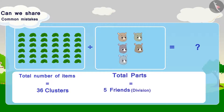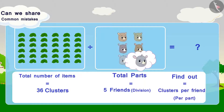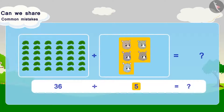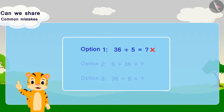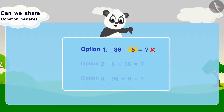In Option 1, total number of items equals 36 clusters and total parts equals five friends. But what will poor Gaggoo eat? In this option, Gaggoo has not been included while calculating the total parts. The total number of parts is wrong. This is a very common mistake we make when we divide — always count the total number of parts correctly.